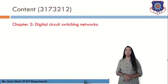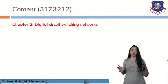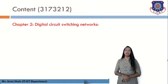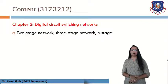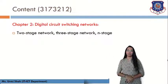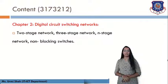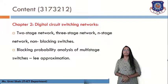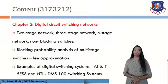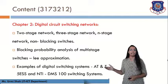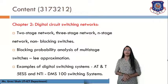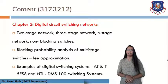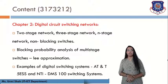The second chapter deals with Digital Circuit Switching Networks — the circuitry and networks involved in digital switching. Topics in Unit 2 include: two-stage network, three-stage network, n-stage network, non-blocking switches, blocking probability analysis of multi-stage switches, Lee approximation, and examples of digital switching systems such as AT&T 5ESS and NTI TMS 100 switching system.